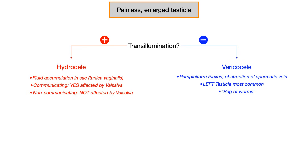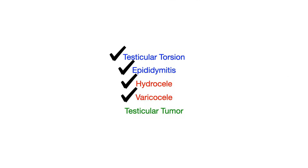Bottom line, you're really only worried about transillumination, but know these other high yield bits associated with both hydrocele and varicocele. So we've covered the difference between torsion and epididymitis, and the difference between hydrocele and varicocele. This is all very high yield information. It's unlikely you'll be given a testicular tumor with high frequency, but let's talk briefly about it for completeness sake.